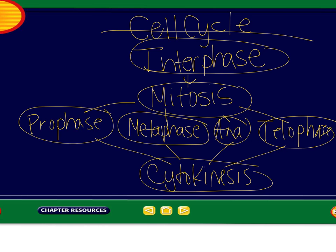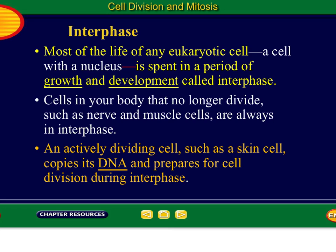Most of the life of a eukaryotic cell is actually just spent in interphase — that's the majority of the cell cycle, and some cells never get out of interphase. For number two, interphase: most of the life of any eukaryotic cell, a cell with a nucleus, is spent in a period of growth and development, called interphase. So put 'growth and development' in those blanks. Cells that no longer divide, such as your nerve cells and muscle cells, are always in interphase. Once muscle cells get damaged, they don't reproduce or repair themselves.